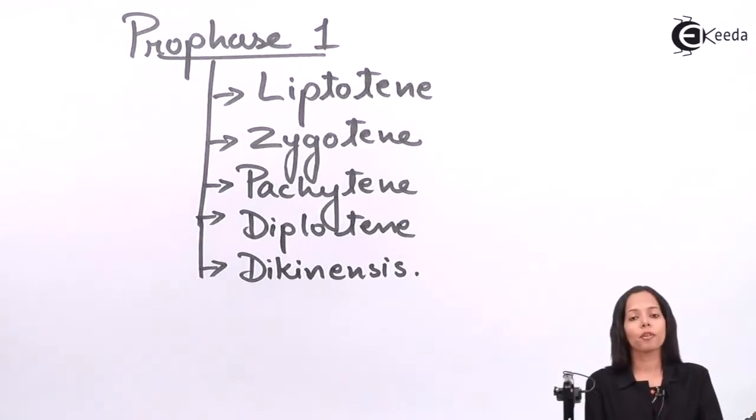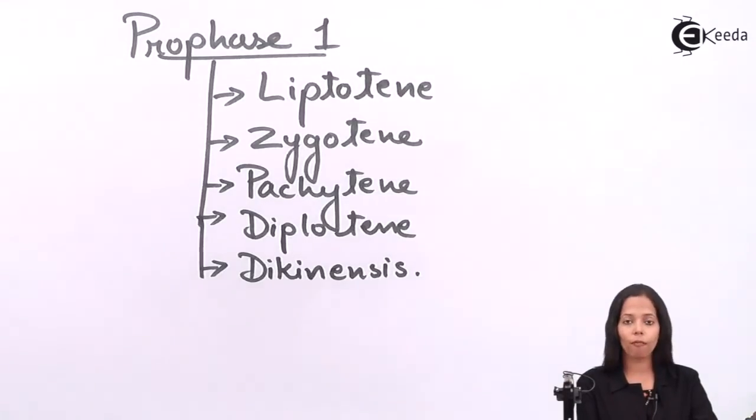So the stages of prophase 1 are Leptotene, Zygotene, Pachytene, Diplotene and Diakinesis. Now we completed with the meaning of meiosis and we will continue with the phases of meiosis 1 in the next video. Thank you very much student.